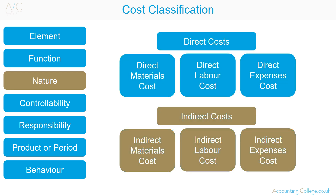Indirect costs cannot be directly identified to a specific cost object. They are costs that typically benefit multiple cost objects, and it would be impractical to accurately attribute them to individual products, services or departments. Examples include: indirect materials (e.g., machine oil used to lubricate machines), indirect labour (e.g., the cost of a supervisor who supervises the curtain makers), and indirect expenses (e.g., the cost of renting the factory). The total of indirect costs — indirect materials plus indirect labour plus indirect expenses — is known as overheads.